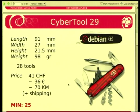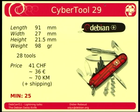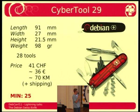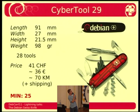We have two models we want to propose for selling. The first one is the Cybertool 29. It has 28 tools and you can load some Allen keys to unbrick or brick your computer. The cost is supposed to be around 41 Swiss francs — that's about 70 kilometers equivalent — plus shipping. One thing to note is that there is a minimum order of 25 for us to have the Debian branding on it.